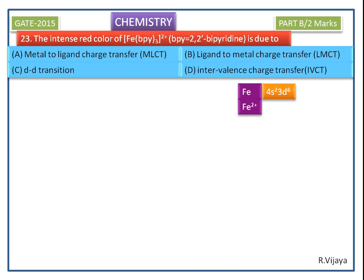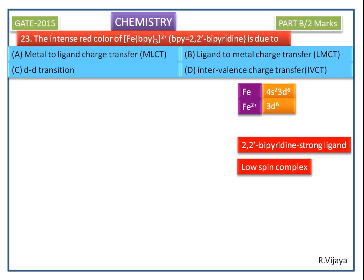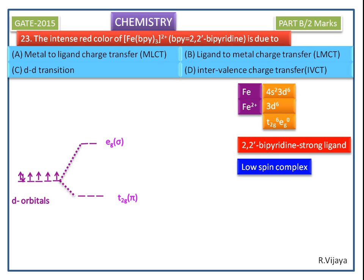In this complex, iron exists in the +2 oxidation state, so its valence electrons are 3d⁶. Bipyridine is the strongest field ligand, so it forms a low spin complex. In the octahedral geometry, the d-orbitals split into T2G and EG orbitals with high crystal field stabilization energy. Because of this low spin complex, all 6 valence electrons are filled in the T2G orbital.